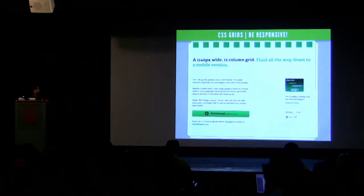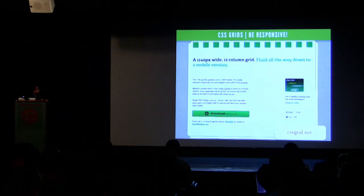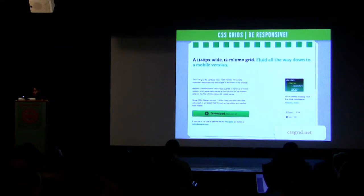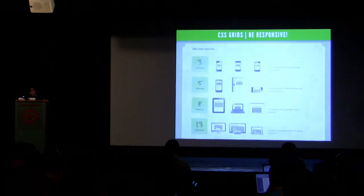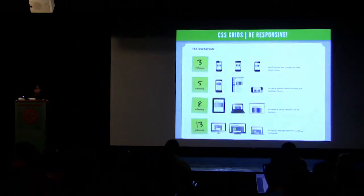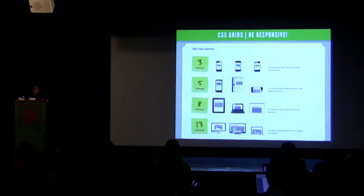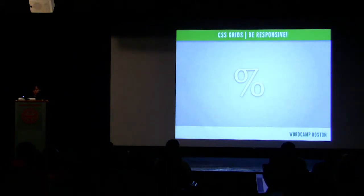There are fluid frameworks, like cssgrid.net, where you can base a site and it'll be fluid. There's also the Less Framework — a cross-device grid system based on media queries that adapts itself to different devices on its own. You can work with your theme based on some of those methods, or adapt your own theme. Basically what you need is your grid system to be based on percentages.